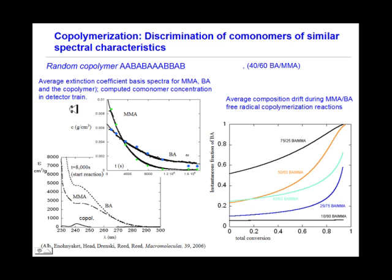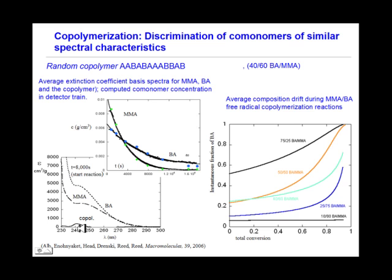These concentrations are computed based on following the UV spectra of the comonomers, shown in the next graph, which shows methylacrylate, methylmetacrylate, and the copolymer. These are just selected spectra.